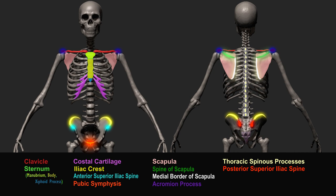This right here is the sacrum. It is the triangular shaped bone in the lower back located between the two hip bones of the pelvis. These are the important landmarks you need to remember on the torso region.